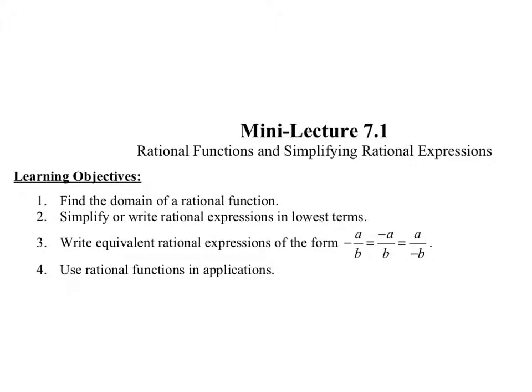In section 7.1 we're looking at rational functions and simplifying rational expressions. Our objectives are to find the domain of a rational function, simplify or write rational expressions in lowest terms, write equivalent rational expressions of the form negative a over b, which equals negative a over b or a divided by negative b, and to use rational functions in applications.